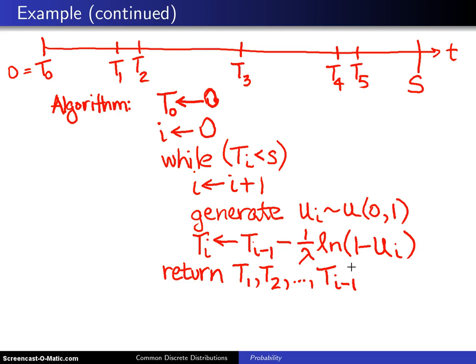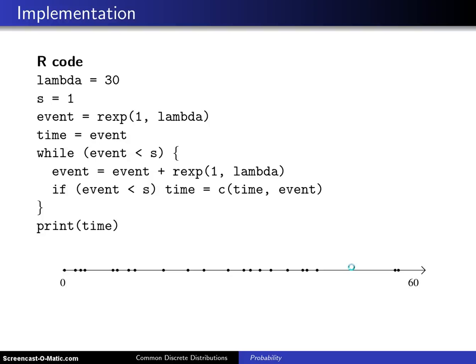If you wanted to implement this in R, on the next page you'll see some R code that is used to generate a Poisson process. Earlier I did not define lambda, so I do that in the first statement here: lambda = 30. s = 1, which says I'm going to generate values between 0 and 60 minutes, and 60 minutes of course is the same as one hour, so that's where s = 1 comes from.